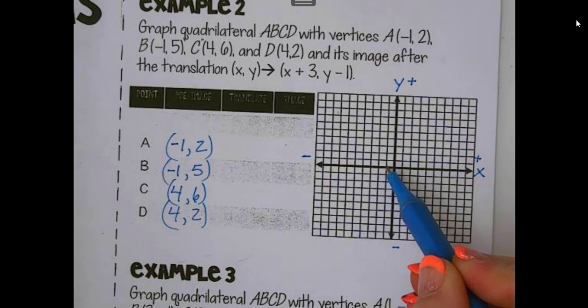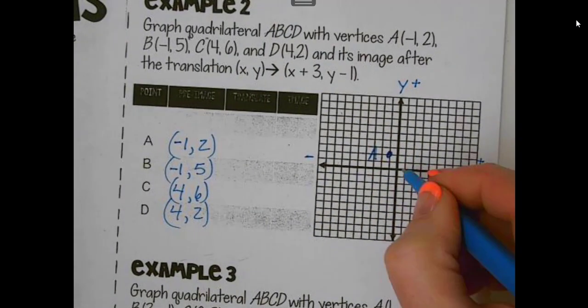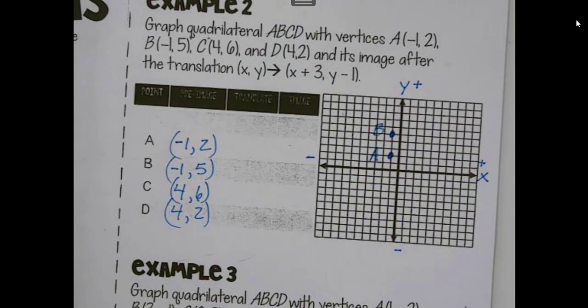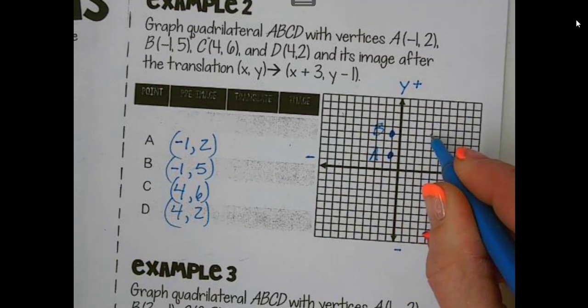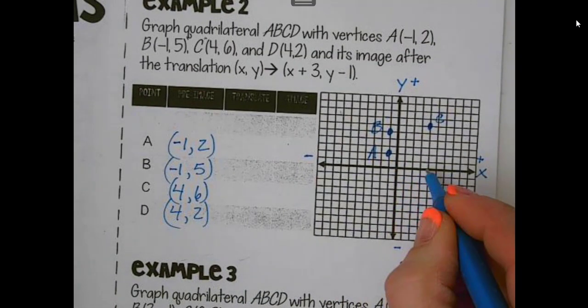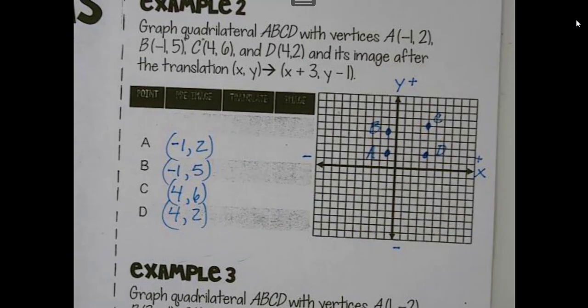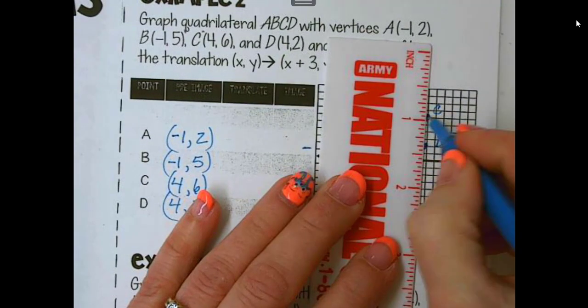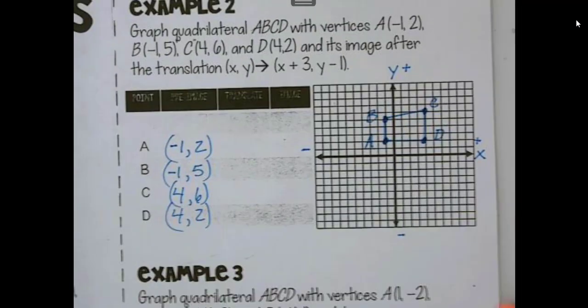We're going to plot negative 1, 2. Left, up 2. Now I want to go ahead and label that A. Negative 1, positive 5. 1, 2, 3, 4, 5. Label that B. 4, 6. Start at 0, 0. 1, 2, 3, 4, up 6. That's our C. And then 4, 2. And again, at any time, feel free to pause. We just have to get those plotted accurately. Now I'm going to use a ruler. This is a quadrilateral, four-sided shape. Got it done.